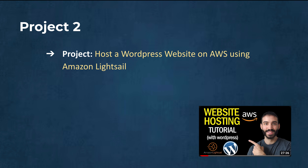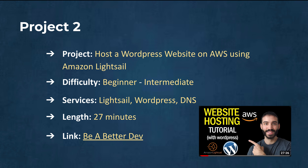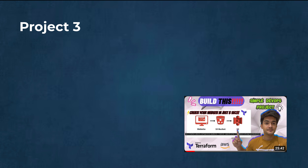Moving on to Project 2, this is a project where you will host a WordPress website on AWS using Amazon Lightsail. It introduces you to hosting dynamic websites and you will learn how to set up a WordPress website, manage the database, configure domain settings, and understand basic AWS infrastructure management. The level is beginner to intermediate, the services used are Amazon Lightsail, WordPress, and DNS, and the video length is 27 minutes. It's from the Be Better Dev channel.